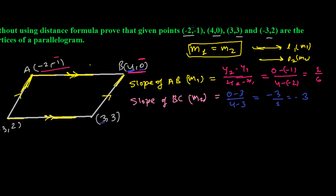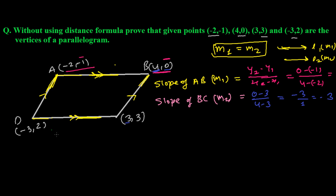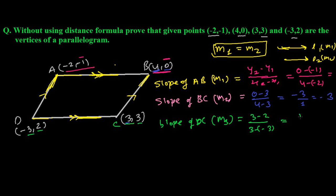Now let's find the slope of DC — call this m3. Difference of y-coordinates: 3 - 2 = 1. Difference of x-coordinates: 3 - (-3) = 6. So slope of DC, m3 = 1/6.